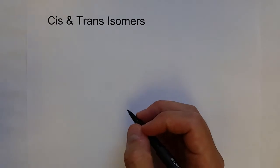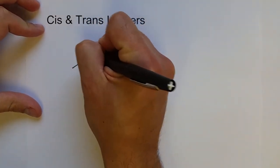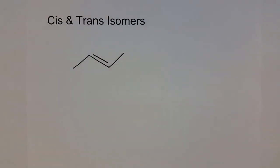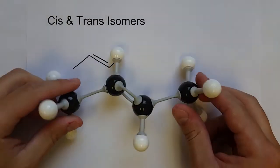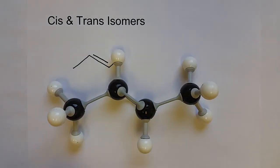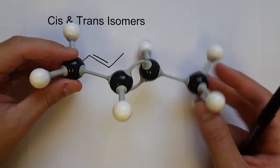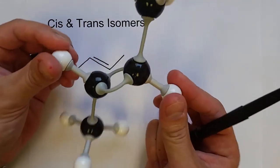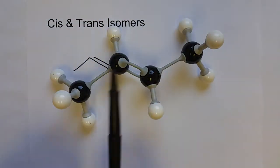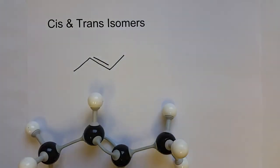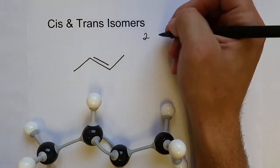Let's draw an alkene with four carbons and a double bond between the second and third carbons. What I've drawn has four carbon atoms with a double bond between two of them. Because of the double bond, each of those carbons only needs one hydrogen to make four bonds. This is the structural formula for 2-butene — one, two, three, four carbons, so butene, and the double bond is on carbon two.